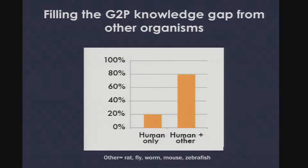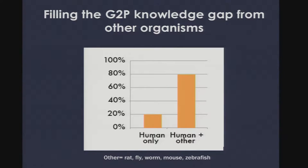In this figure, we took all the coding genes in the human genome and looked to see how many of them we have causal mutations for a known disease or phenotype. That number — from OMIM plus ClinVar — is about 20 percent. But if we take the orthologs of every coding gene in the human genome and compare those against the five most widely used model organisms — rat, fly, worm, mouse, and zebrafish — and look at whether we have any phenotype data caused by mutations in those genes, we go up to 80 percent coverage.